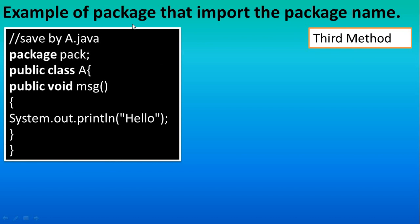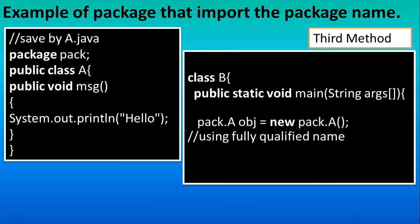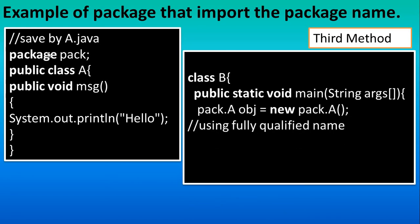The third method is fully qualified name, which we use very rarely. You have a.java and you create the next program with the main method. At the creation of the object, the important statement is: package name dot A — since A is available in the pack package — then you create the object and access the method. Whenever you access the content, you have to use the fully qualified name 'pack.ClassName' every time.